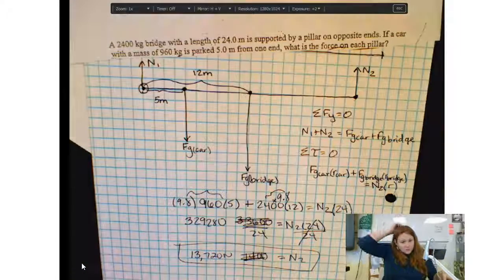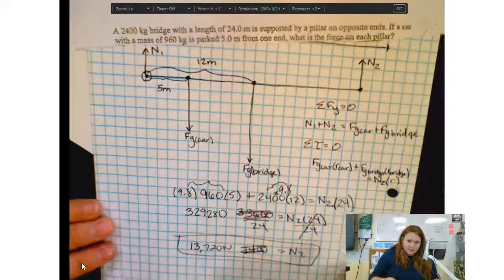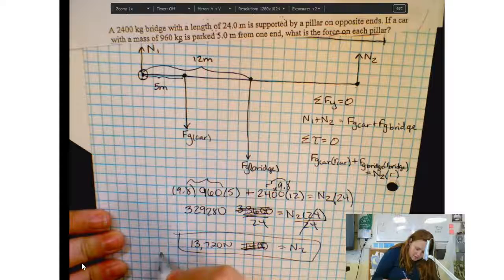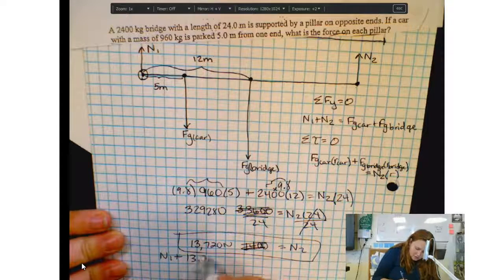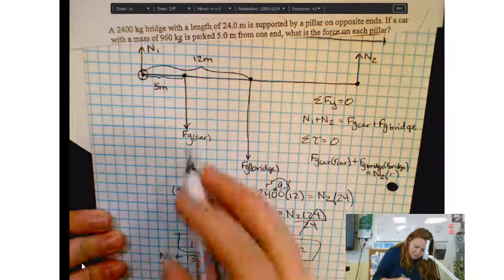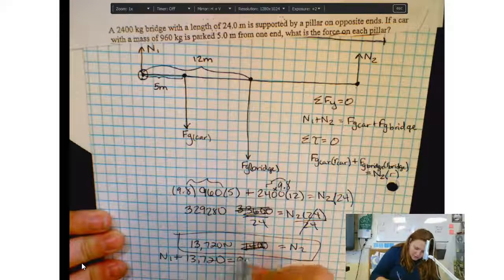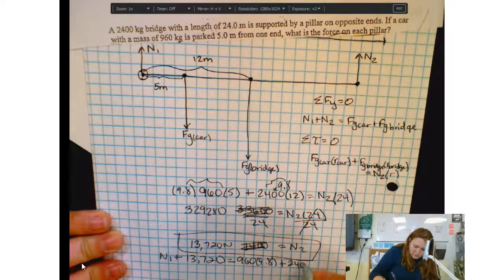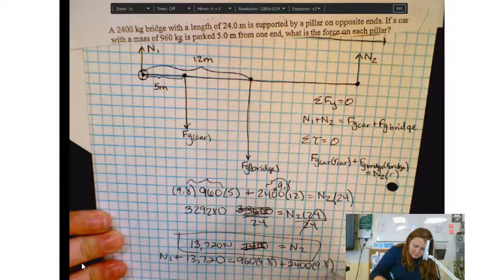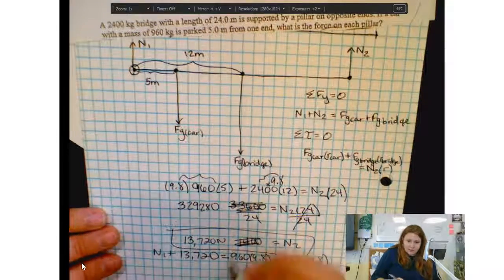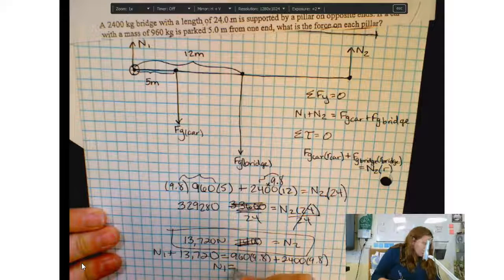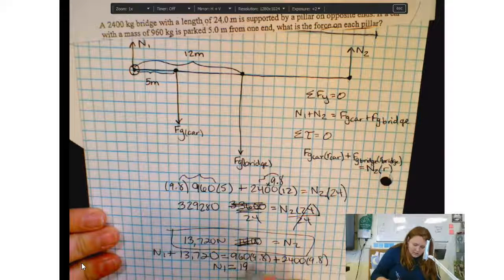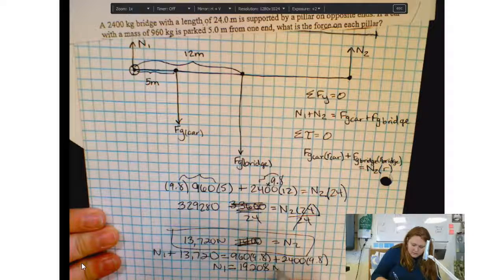Now once you have N2 finding N1 is pretty easy because you just have N1 plus N2 has to equal the force of gravity of the car which is 960 times 9.8 plus the force of gravity of the bridge which is 2,400 times 9.8. When you solve this you will get N1 equals 19,208 approximately and that's Newtons.